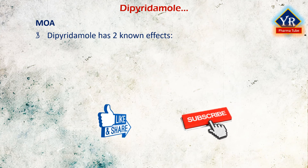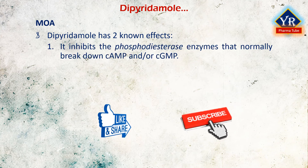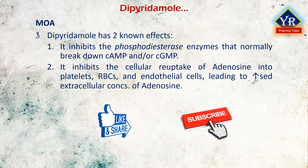Dipyridamol has two known effects acting via different mechanisms of action. Number one: dipyridamol inhibits the phosphodiesterase enzymes that normally break down cyclic AMP or cyclic GMP. Number two: dipyridamol inhibits the cellular reuptake of adenosine into platelets, red blood cells, and endothelial cells, leading to increased extracellular concentrations of adenosine.